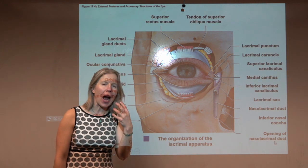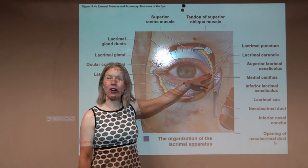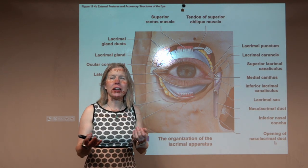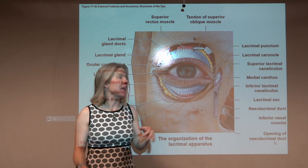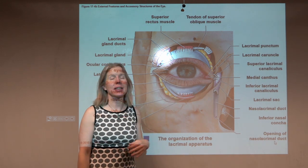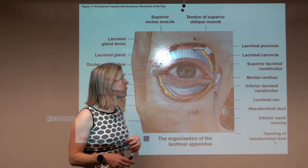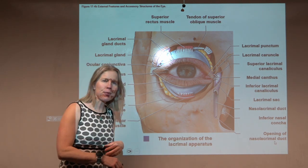Those tears are actually going to enter the nasolacrimal duct and drain into the nasal cavity. So if you've ever been crying, if there's too many tears, they can't all get taken in by the punctum, they're going to spill over onto your face. But those that are making it down into that lacrimal sac and nasolacrimal duct are part of why your nose starts running as well.